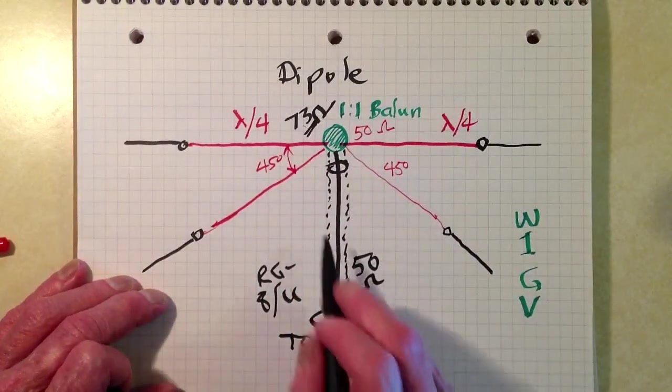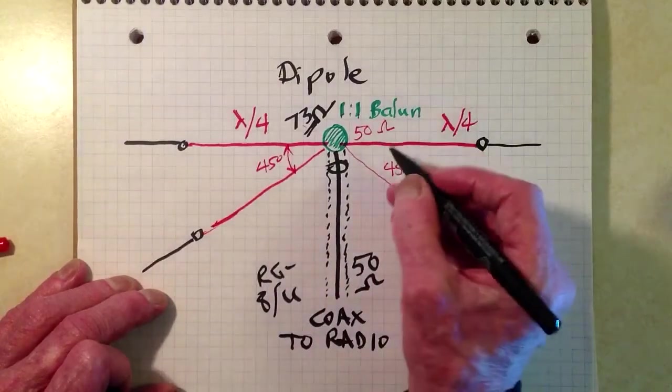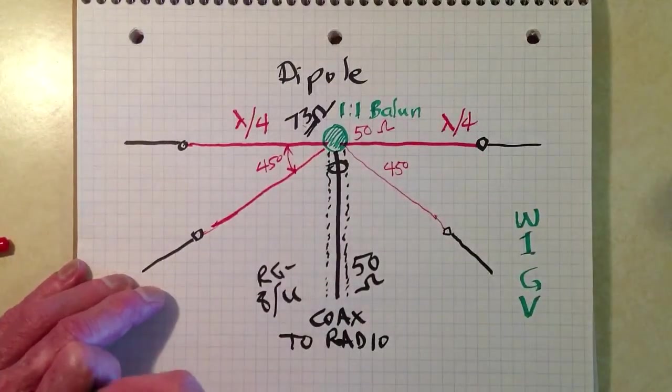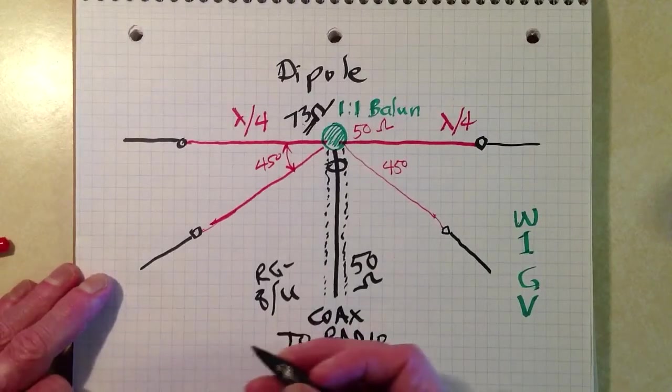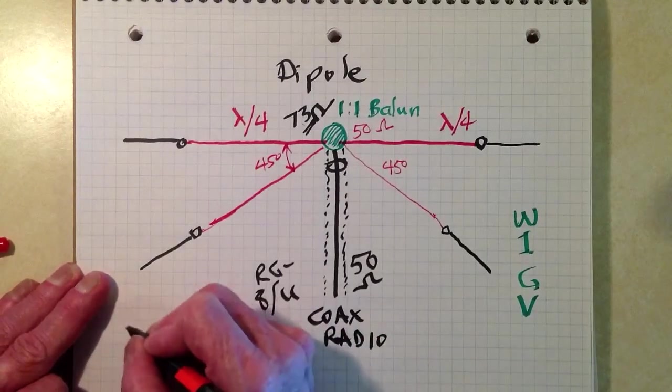Once again, a quarter of a wavelength on each side. You still need the balun. These angles should be equal, 45 degrees, 40 degrees. What this is, a popular antenna known, of course you've heard of this one, Inverted V.